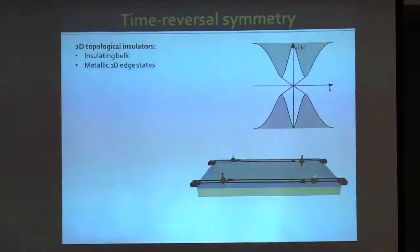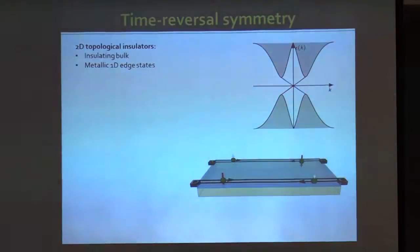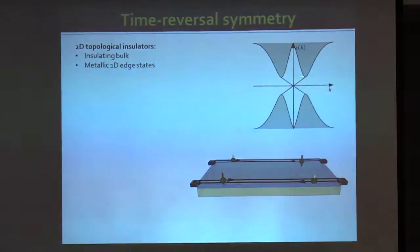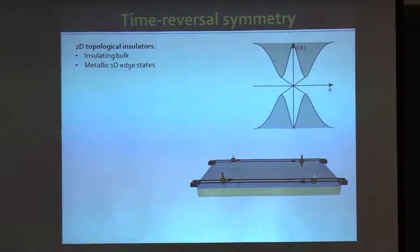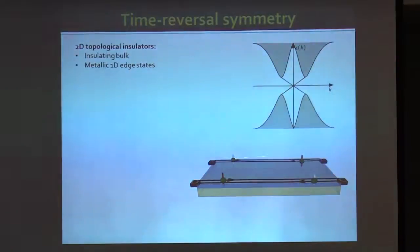Let's start with the helical edge states. A two-dimensional topological insulator has an insulating bulk but metallic helical edge states. The bulk states are gapped, and inside the gap we have these helical edge states, characterized by right movers with spin up and left movers with spin down. On the upper edge you have right movers with spin up and left movers with spin down, and the lower edge is just the opposite.